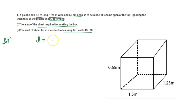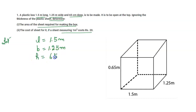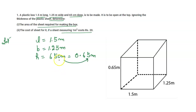So, given: the length is 1.5 meters, breadth is 1.25 meters, and the depth — that means height — is 65 centimeters, which equals 0.65 meters. When centimeters are converted into meters, we divide by 100.